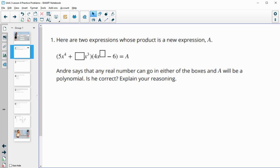Number one says here are two expressions whose product is a new expression A. Andre says that any real number can go into either of these boxes and A will be a polynomial. Is he correct?